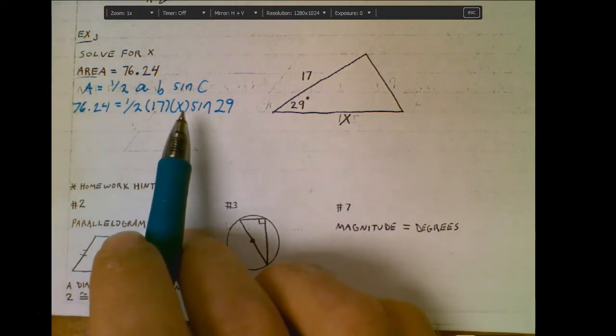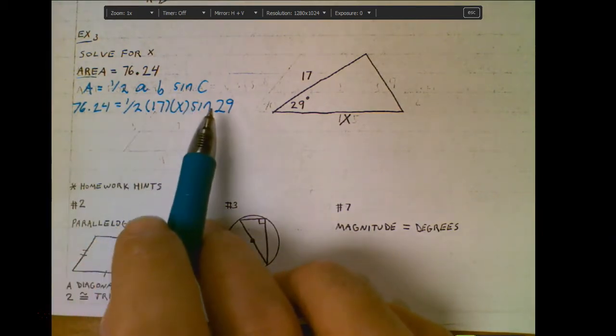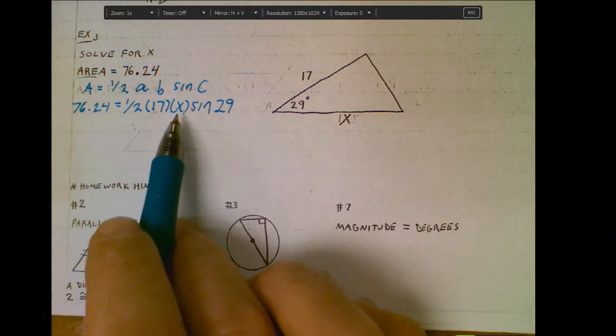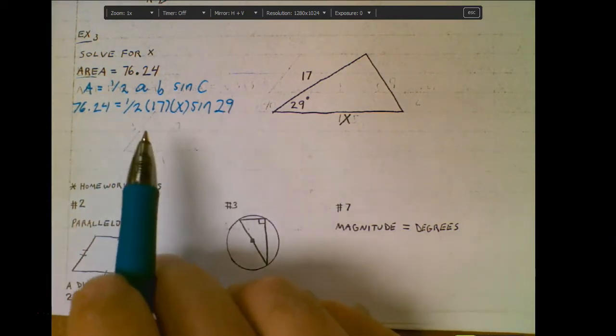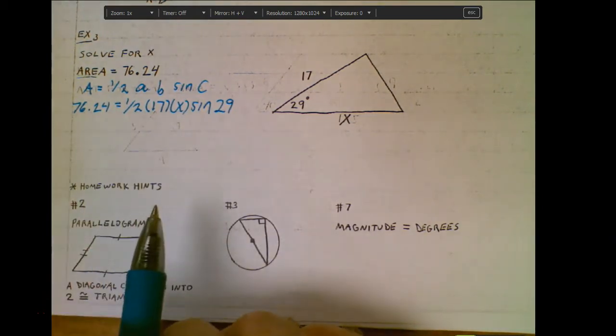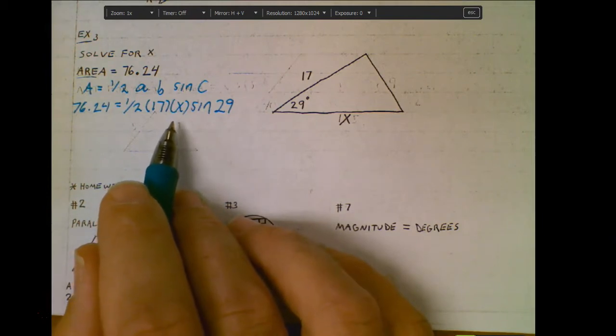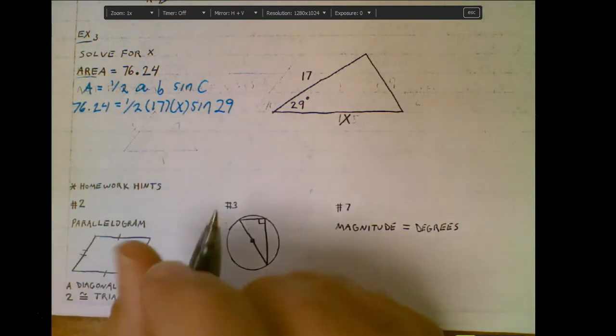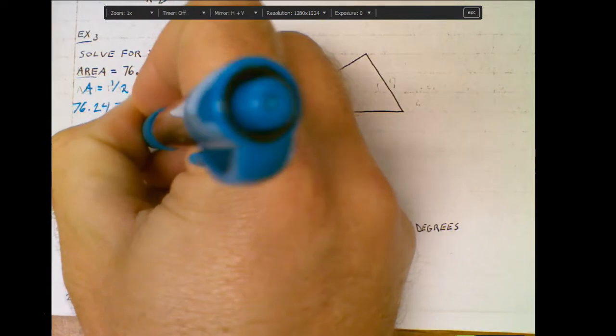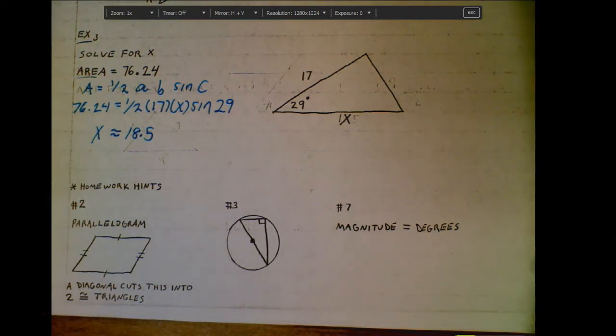So in this case, I just have to get X by itself. So half of 17, we're going to need to divide that over to here. I'm also going to need to divide sine 29 over to here. And that's what would get X by itself. So all this is multiplication, which means I'm going to divide everything that's surrounding the X over to this side in order to get my answer. So that's what we would be looking for. So try that on your own if you're following the notes here to solve for X. But if you do that correctly, you should come out with X being about 18 and a half if you do that right. So give that one a try. Just make sure you're punching those in your calculator correctly and see if that one works out for you.